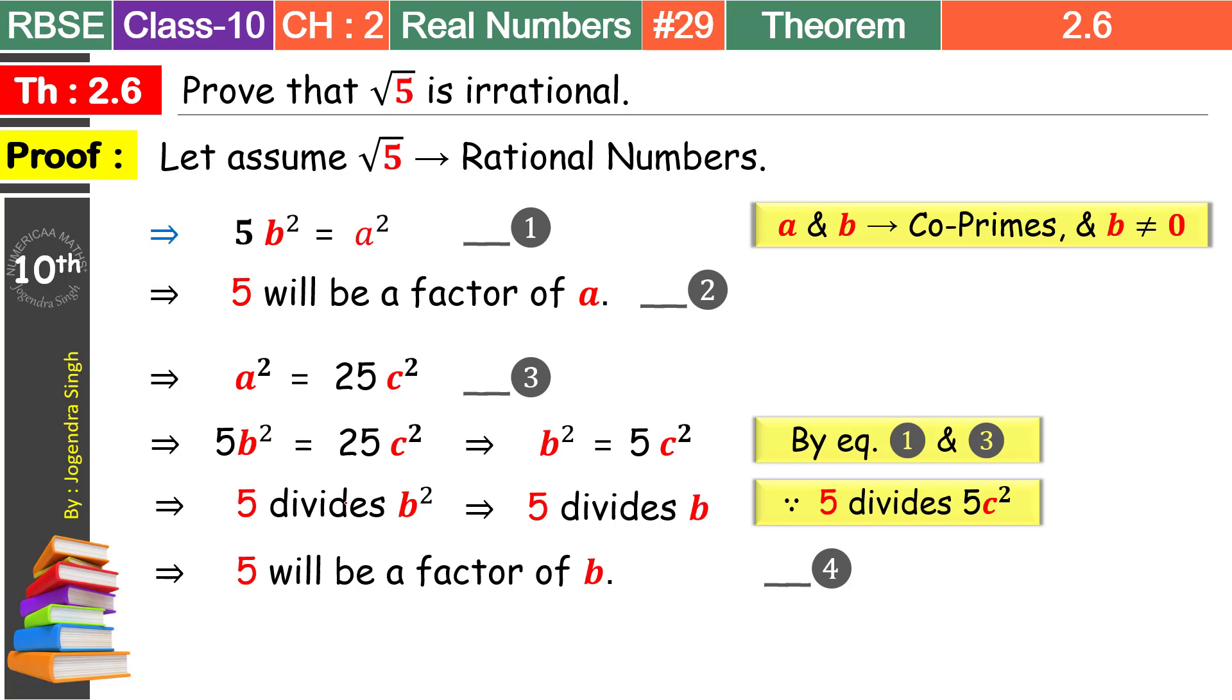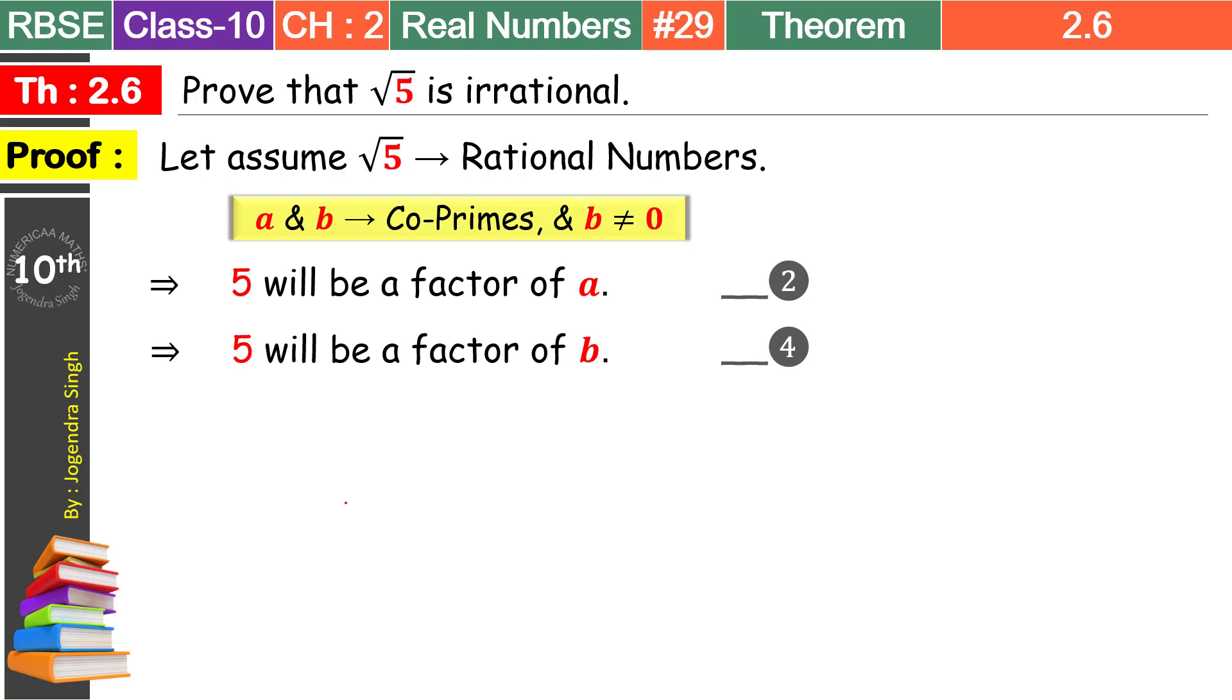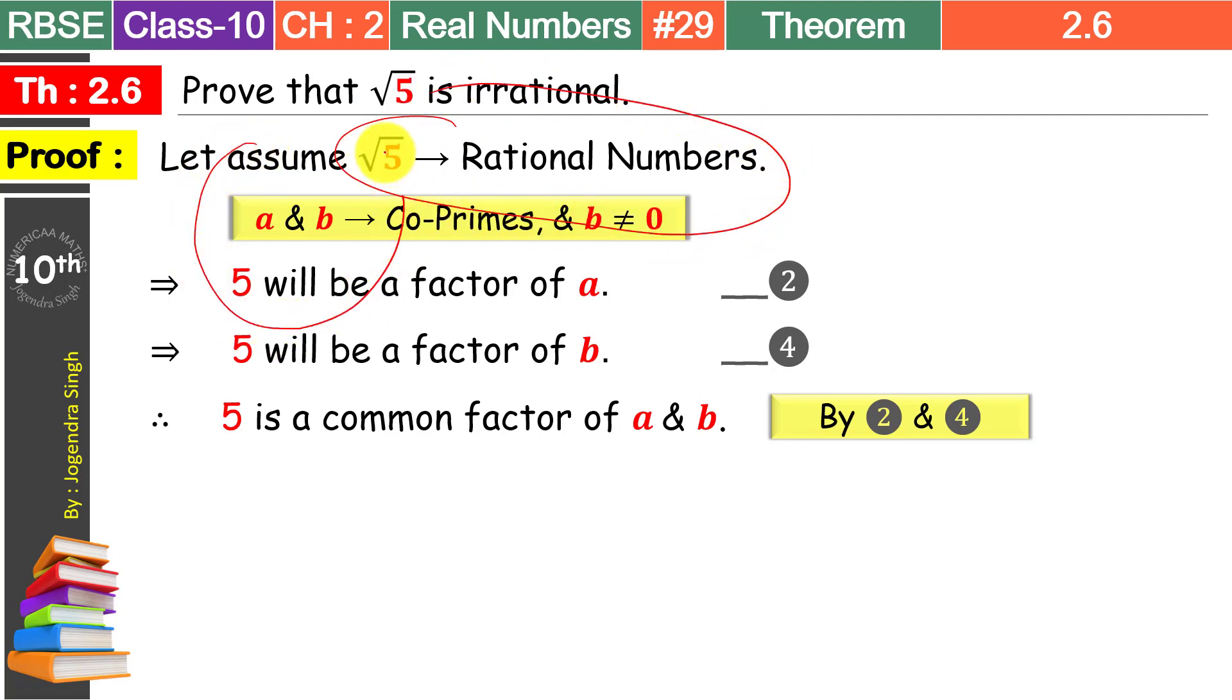Phir se humne space chahiye. Toh baqi chizein hum hata dete hain. Kaam ki chizein rakhte hain. Yeh humne kaam ki chizein le li. Ab humne paas equation 2 kya karti hai. Equation 2 mein likha hai ki 5 is a factor of a. Aur equation 4 mein likha hai 5 is a factor of b. Toh hum keh sakte hain 5 a common factor hai jo a mein bhi hai aur b mein bhi hai. So by equation 2 and 4 we can write this as. 5 is a common factor of a and b. Ab jo dekhne wali cheez hai.